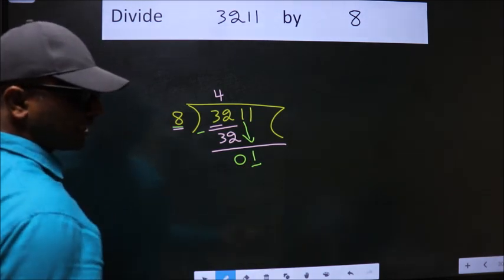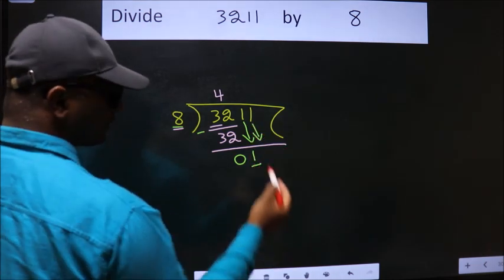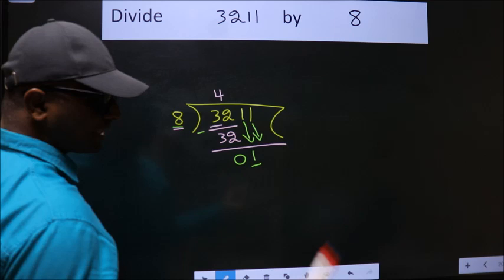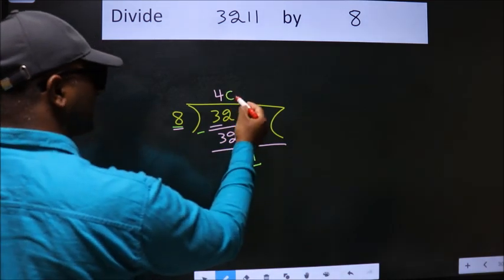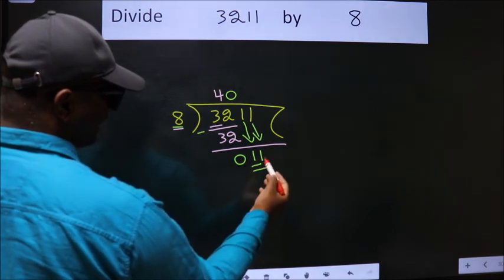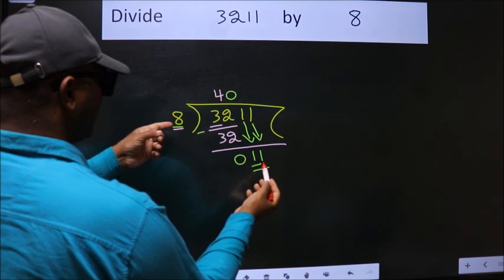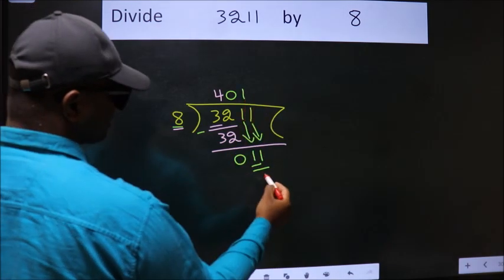So we should bring down the second number. And the rule to bring down second number is put 0 here. Then only we can bring down this number. So, 11. A number close to 11 in 8 table is 8 once 8.